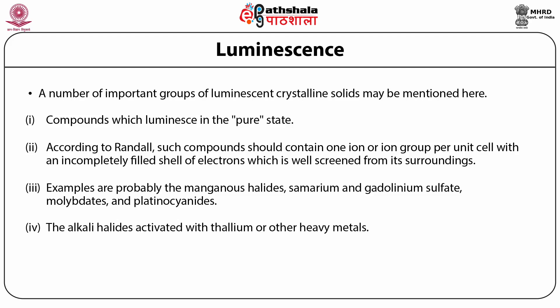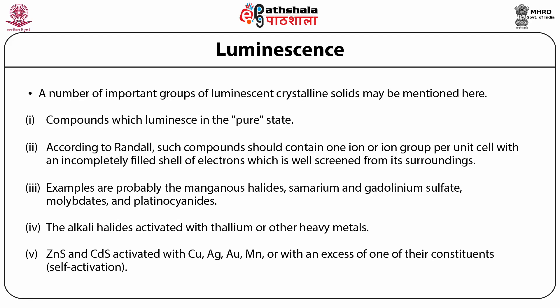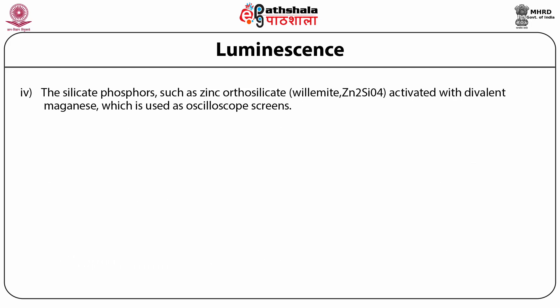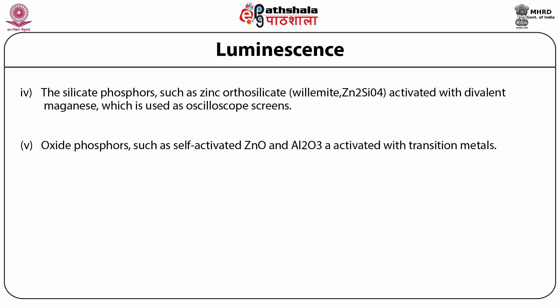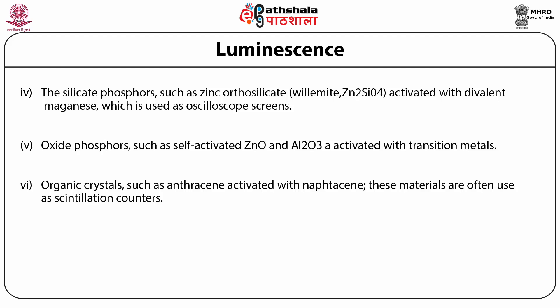Second, alkali halides activated with thallium or other heavy metals. Third, zinc sulfide and cadmium sulfide activated with copper, silver, gold, manganese, or with an excess of one of their constituents. Fourth, silicate phosphors such as zinc orthosilicate activated with divalent manganese, used as oscilloscope screens. Oxide phosphors such as self-activated zinc oxide and Al₂O₃ activated with transition metals. Fifth, organic crystals such as anthracene activated with naphthacene. These materials are often used as scintillation counters.